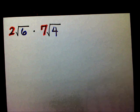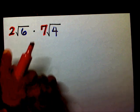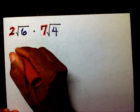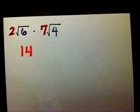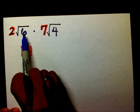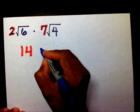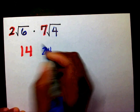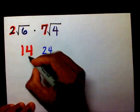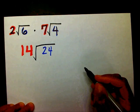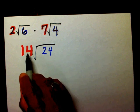What I'm going to do, I'm going to multiply my outside numbers. 2 times 7 is 14. And my inside numbers, I'm going to multiply my inside numbers, which are my radicands. 6 times 4, which is 24. And I'm going to keep my radical symbol. So, right now I have 14 radical 24.